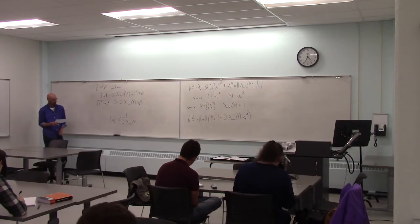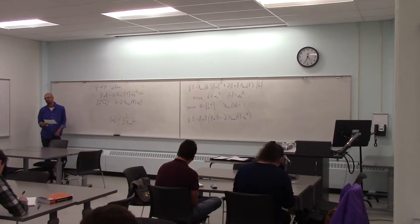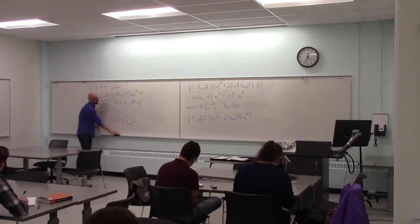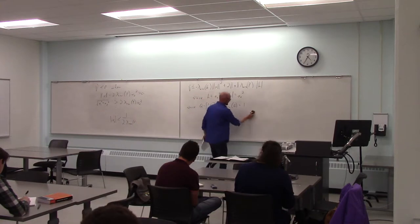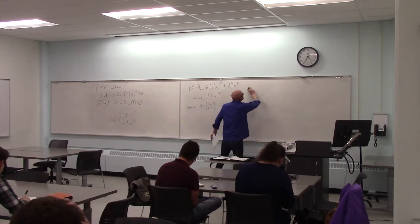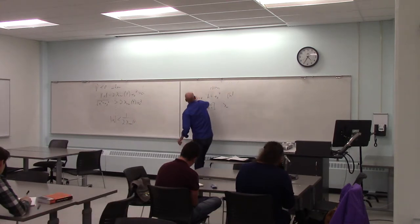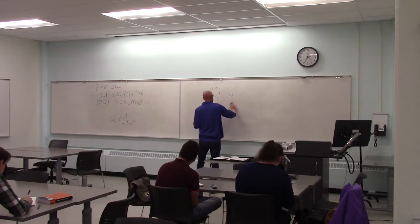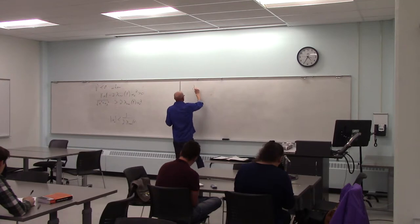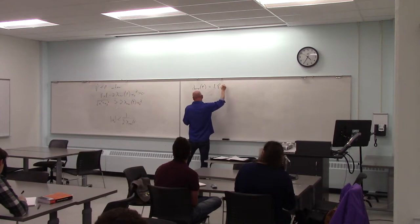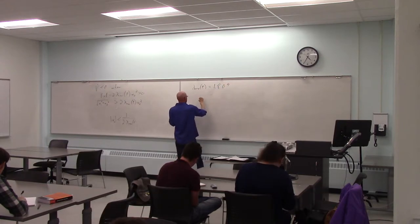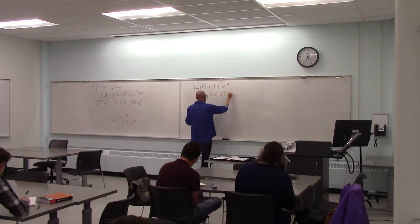So v dot is less than 0 as long as x2 is small enough, basically.